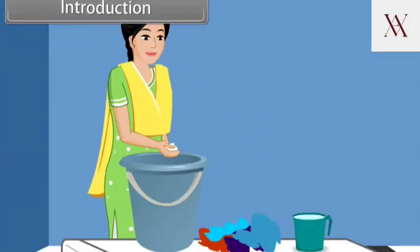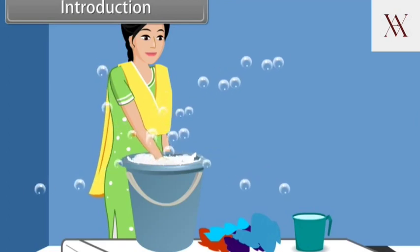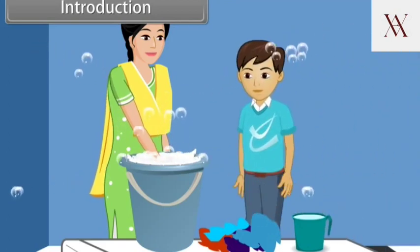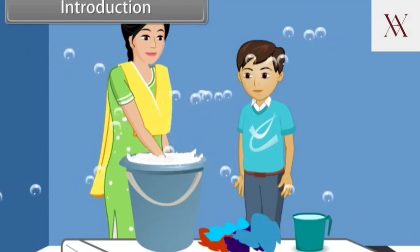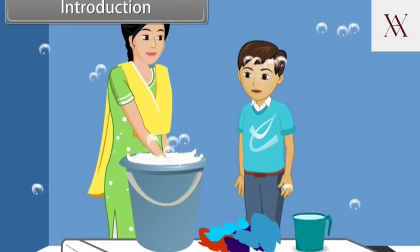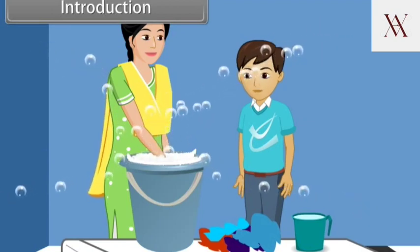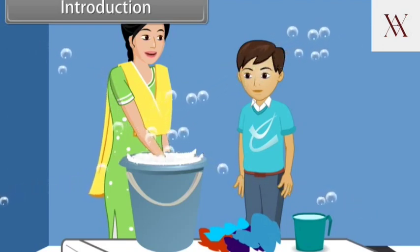Introduction. Ravi's mother is pouring detergent powder into the water bucket and starts shaking well by hand. Due to this, a lot of soap bubbles are produced and coming out from the bucket. Ravi, watching this curiously, asked his mother why soap bubbles are stable while water bubbles are not. His mother replied that it happened due to surface tension.